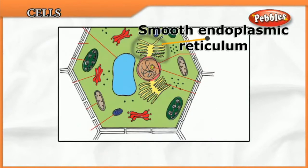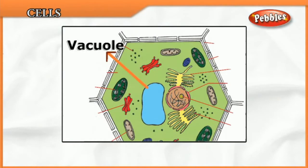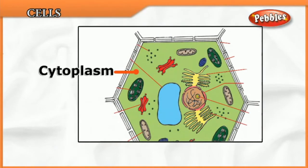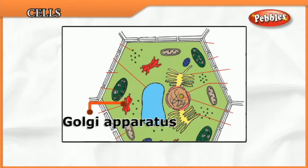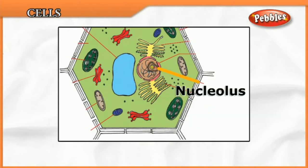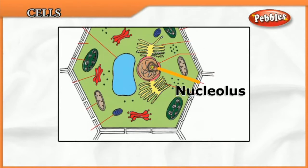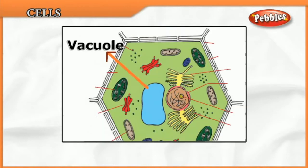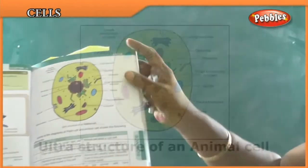Animal cells are smaller in size than plant cells. In animal cells you have smooth endoplasmic reticulum, cytoplasm, a nucleus and nucleolus, and mitochondria. The vacuole, if present, is very small in size. Golgi apparatus is present. Lysosomes are present in animal cells, whereas in plant cells lysosomes are found only in certain unicellular plants. These are the differences between plant cells and animal cells.